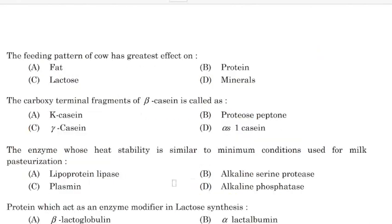The feeding pattern of a cow has the greatest effect on — Correct answer: Option A — Fat. Carboxy terminal fragments of beta-casein are called as —